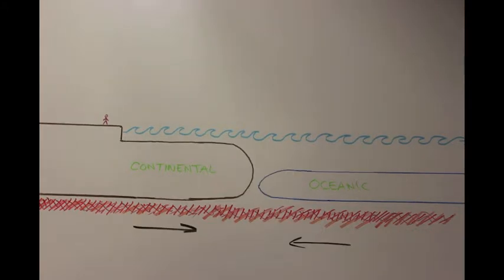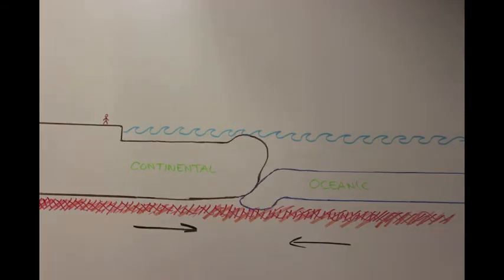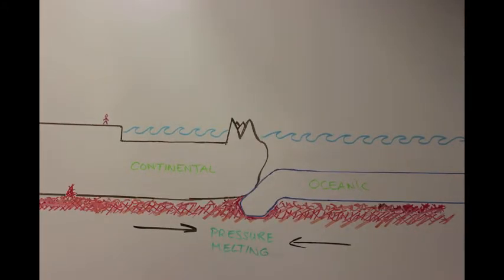What we are attempting to show is a convergent plate boundary. This is where two pieces of the Earth's crust are moving towards each other.